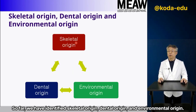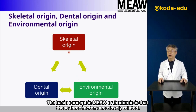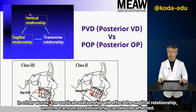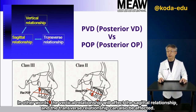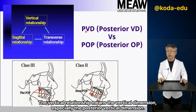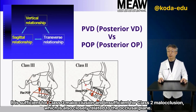So far, we have identified skeletal origin, dental origin, and environmental origin. The basic concept in MEAW orthodontics is that these three factors are closely related. The vertical relationship will affect the sagittal relationship, and the transverse relationship can also be affected. The vertical relationship means the vertical dimension, especially the posterior vertical dimension — sufficient for class III malocclusion and insufficient for class II malocclusion — which is also closely related to the occlusal plane.